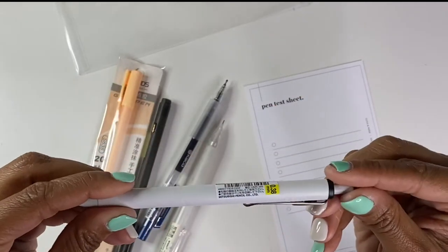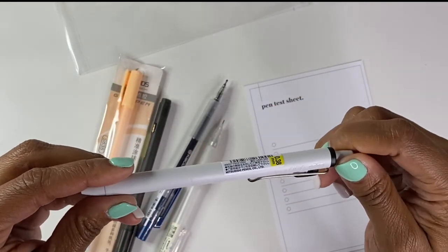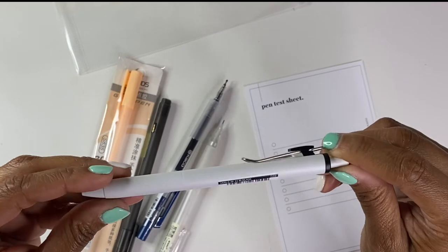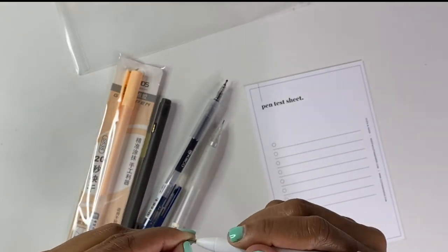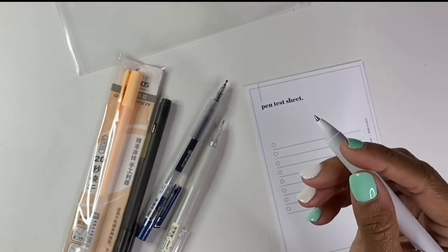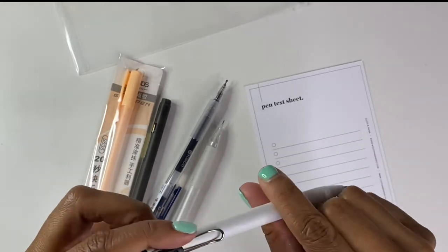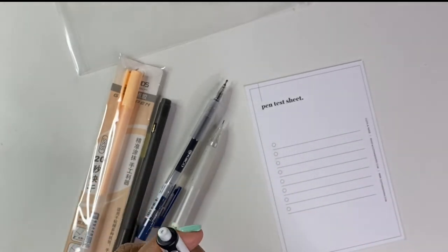So we'll start with this one. It says Uniball One and it's 0.38 millimeters and it is in black. It feels good, it's not too heavy, not too light, so it has a good weight to it. And it is one of the little click pens.